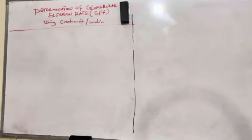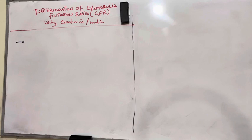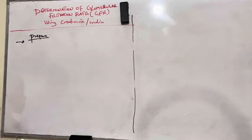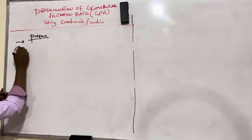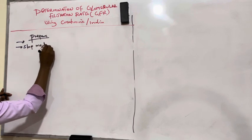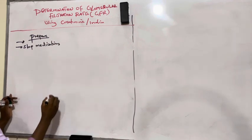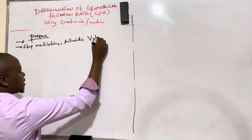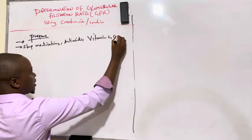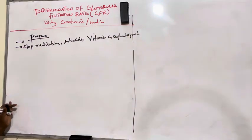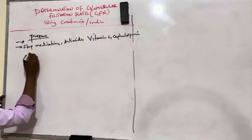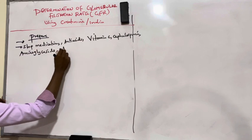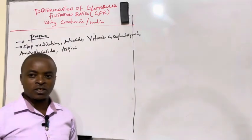Before you begin to do GFR, you prepare the patient first. Patient preparation: you have to tell the patient to stop medications temporarily — medications which affect creatinine levels, like antacids, vitamin C (ascorbic acid), medications like cephalosporins, which also affect or increase creatinine levels, drugs like aminoglycosides, and aspirin.